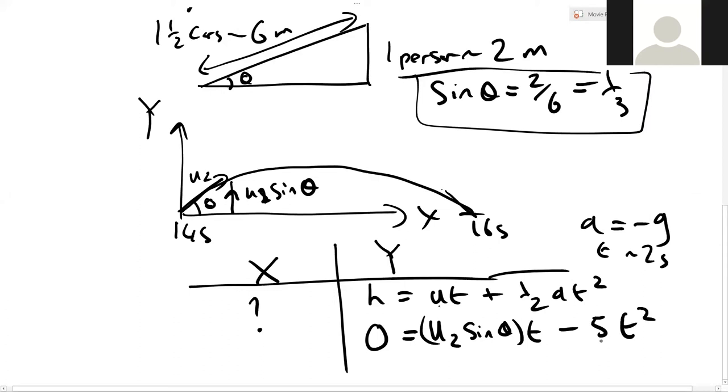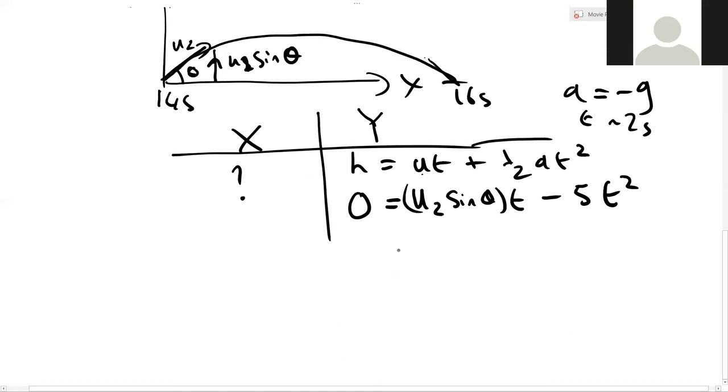See where I got the minus 5 from? It's just putting in g is equal to 10. Well, if we can solve that equation, we just end up with u2 sine theta equals 5t. The other solution being t equals zero, but that doesn't tell us anything.